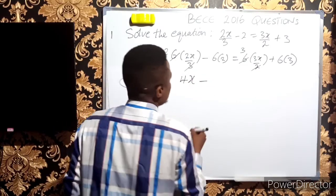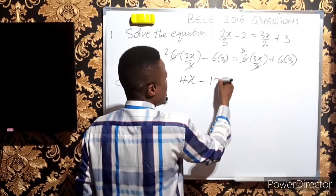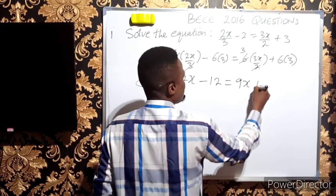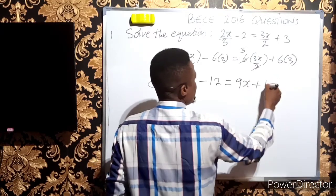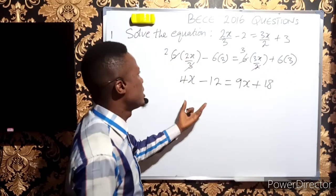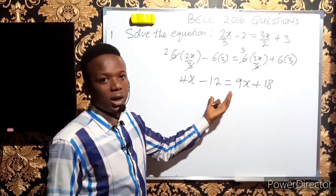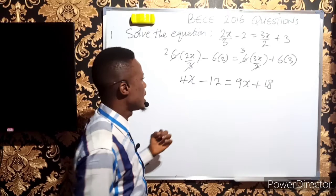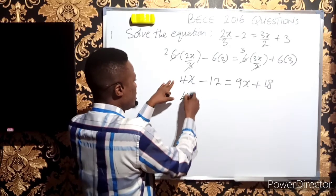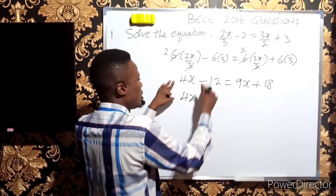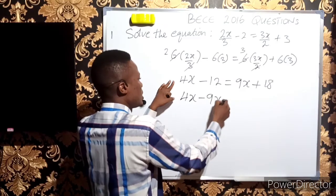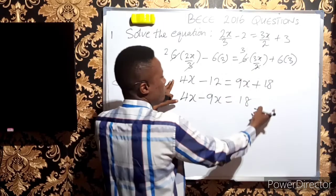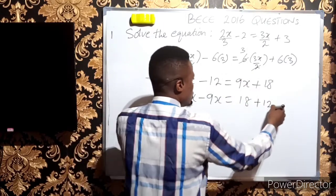Now we've cleared the fractions and have a simple linear equation. Collecting like terms: 4x minus 9x equals 18 plus 12. 4x - 9x gives us -5x, equals 18 + 12 gives us 30.